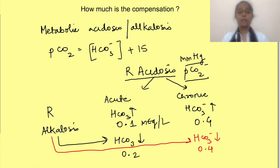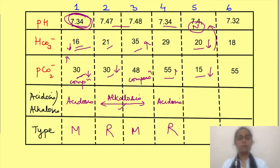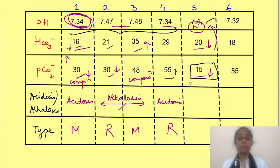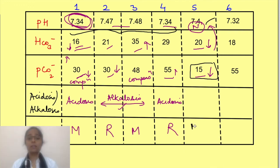Check in the metabolic acidosis and alkalosis scenarios whether compensation is adequate using the formula. Here compensation is adequate; however, note that despite compensation, pH is not actually normal — compensation tries to return it closer to normal but not to the actual normal value. Going back to the fifth scenario: using the formula, pCO2 is much less than expected by compensation alone. So this is actually a mixed case of metabolic acidosis and respiratory alkalosis — a mixed acid-base disorder.